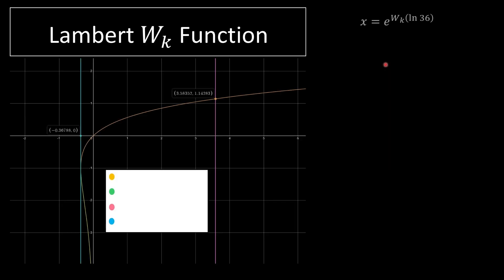Now I'm going to move on to the graph. This is our equation. And over here, LAN 36 is really 3.5835. And now I'm going to explain the Lambert W functions graph.